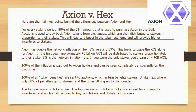Axion has double the network inflation of HEX — 8% versus 3.69% — leading to twice the ROI. For Axion, in the first year, approximately 40 billion AXN will be distributed to stakers proportionately to their stake. If you were the only staker, you'd earn all 40 billion AXN. 100% of the inflation is paid out to Axion holders, completely transparently on the blockchain. 100% of all token penalties are sent to auctions, which in turn benefits stakers — unlike HEX, where only 50% of penalties go to stakers and the other 50% goes to the founder.